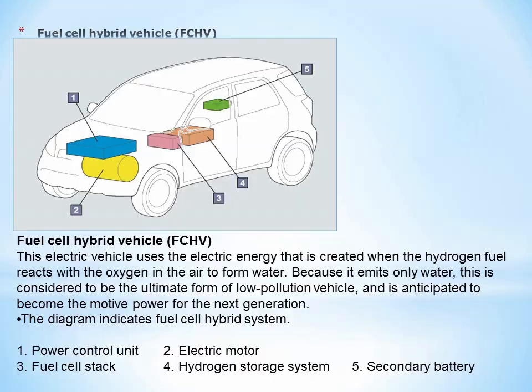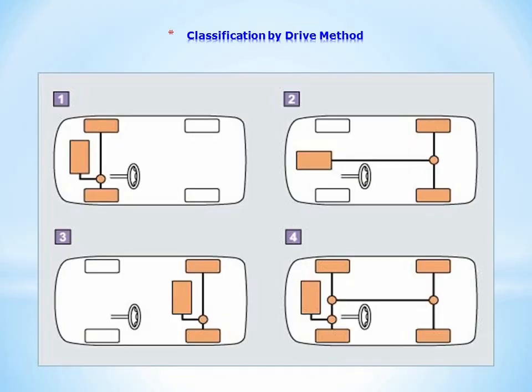Vehicles can also be classified by the position of the engine and drive wheels, and the number of drive wheels: 1. FF – Front engine, Front drive, 2. FR – Front engine, Rear drive, 3. MR – Mid-engine, Rear drive, 4. Four-wheel drive (4WD).